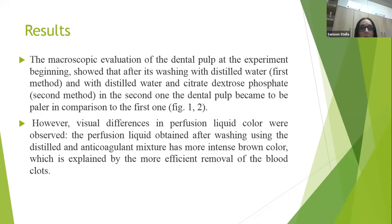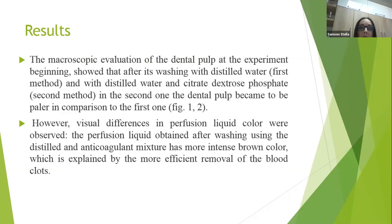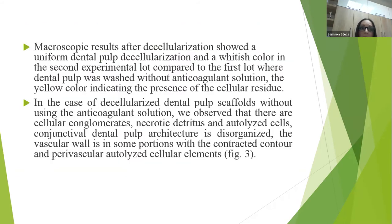The macroscopic evaluation of the dental pulp at the experiment beginning showed that after washing with distilled water (first method) and with distilled water and citrate dextrose (second method), the dental pulp became pale in the second method compared to the first. The perfusion liquid obtained after washing using the distilled water and anticoagulant mixture had a more intense brown color, which would explain more efficient removal of blood and other contents, as can be seen in the first picture. The macroscopic result after decellularization showed uniform dental pulp decellularization and whitish color in the second experimental lot compared to the first lot, where dental pulp was washed without anticoagulant solution. The yellow color indicates the presence of cellular residue.